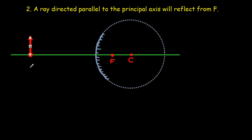Rule two. If we direct our ray parallel to the principal axis, let's go parallel to the principal axis like so. Then the rule is it will reflect as if it were coming from F.